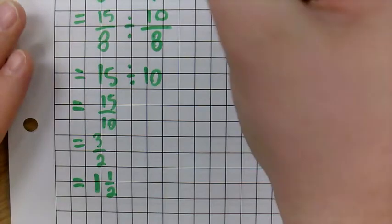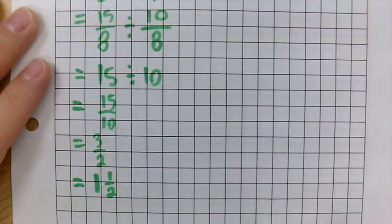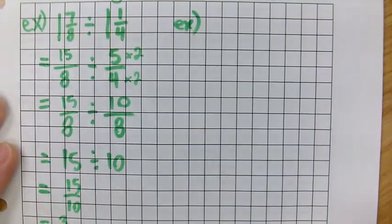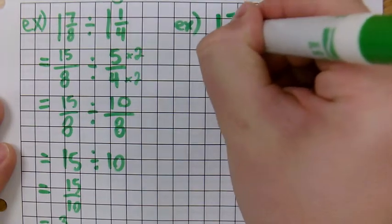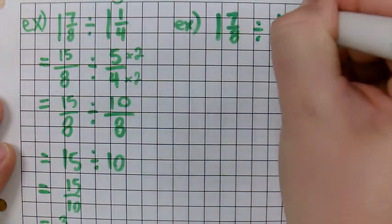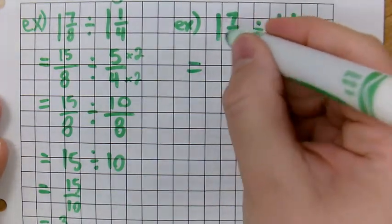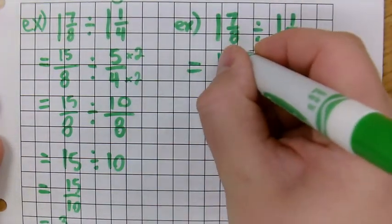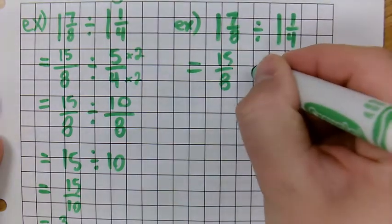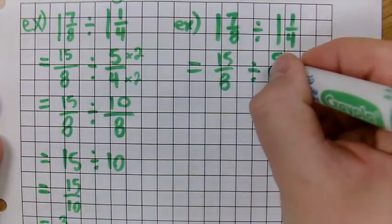What if we were to do it the other way, using the other method? So let's bring this up here. We're going to work parallel, do the same exact example, except we're going to use the other method. So 1 times 8, 15 over 8 is still what it is. We're going to divide by 5 over 4 still.